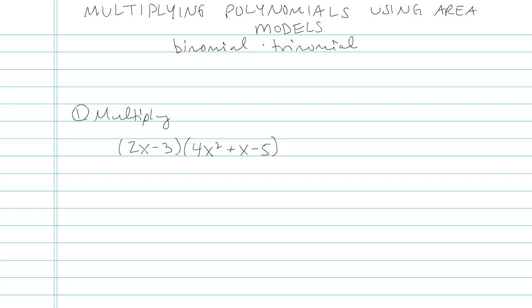This pencast is about a technique for multiplying polynomials where you think about area of a rectangle. You already know that length times width of a rectangle equals its area. What we're going to be doing is turning the length and width into whatever polynomials we're multiplying. Here's what I mean.